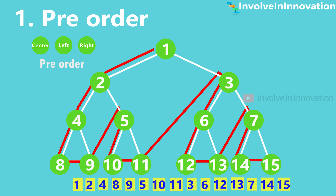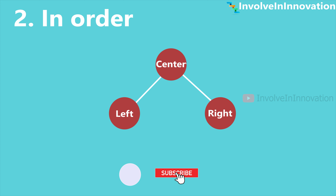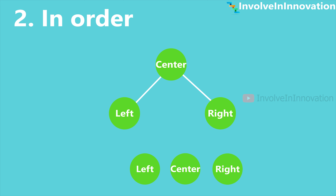If you see here, in pre-order traversal the center comes before the left and right. Now we will see about in-order tree traversal. First traverse the left node, then traverse the center or root node, then traverse the right node. The order is left, center, and right. Here center comes in between left and right, so it is called in-order traversal. We need to visit the left subtree completely, then the root node, finally the right subtree completely.